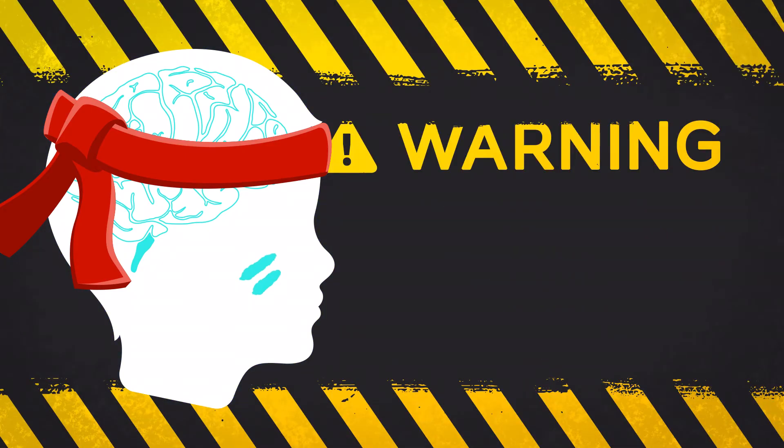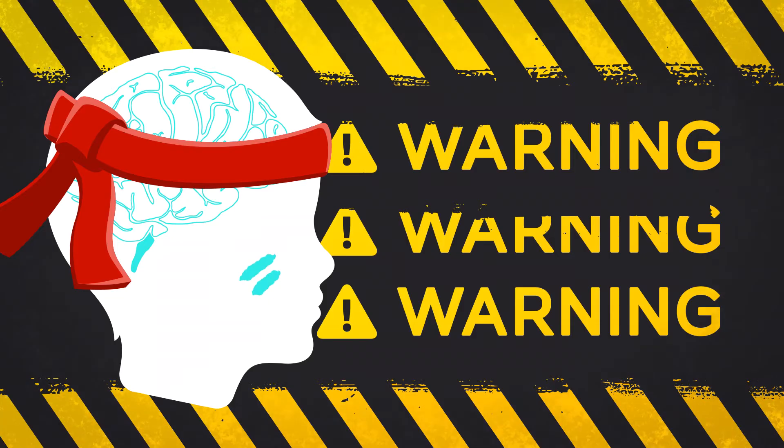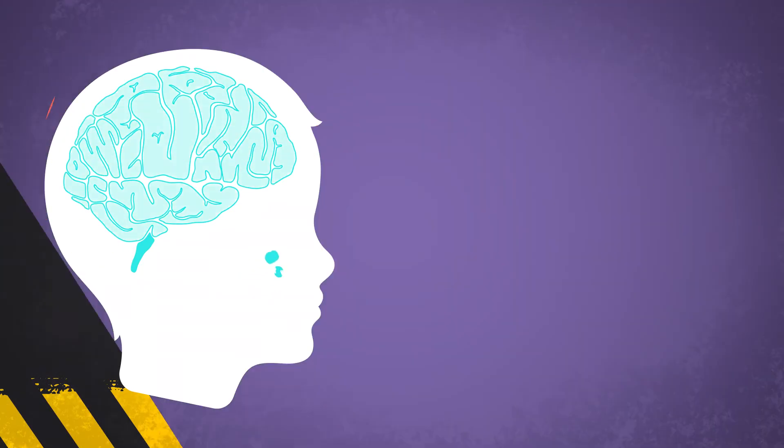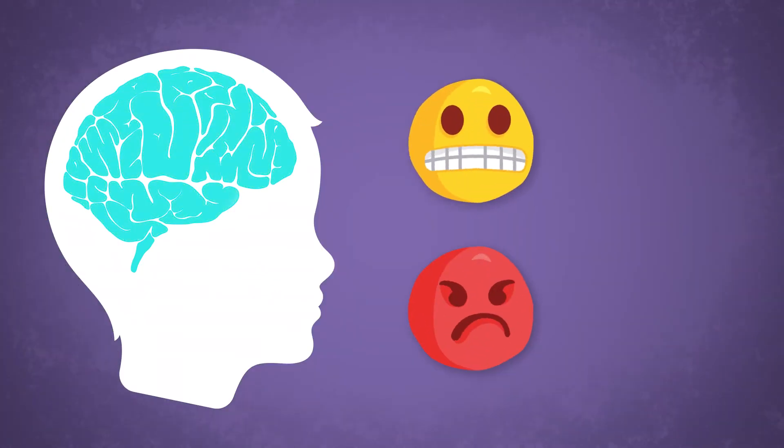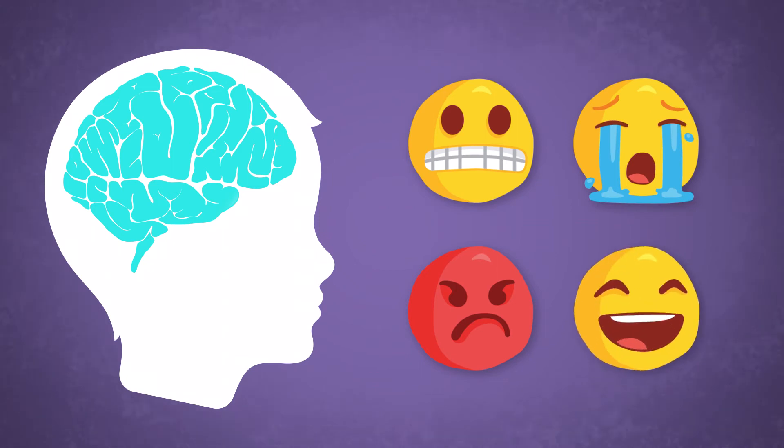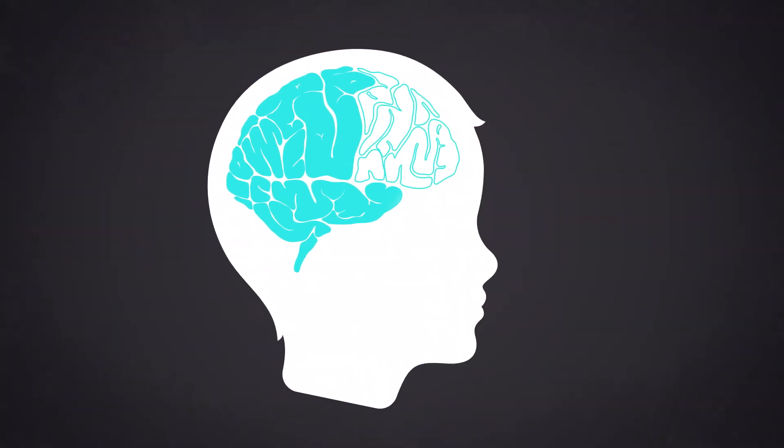It can help our bodies respond quickly in dangerous situations to help keep us safe. But when we feel really strong emotions, our smart brain can go temporarily offline.